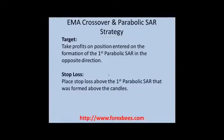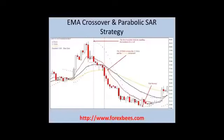Take profit on the short position on the formation of the first Parabolic SAR dot in the opposite direction. For stop-loss, place it above the first Parabolic SAR dot that was formed above the candlestick. Once the first Parabolic SAR dot is formed below the candlestick, that is where you can exit, and the stop-loss should be above the first Parabolic SAR dot formed above the candlestick.